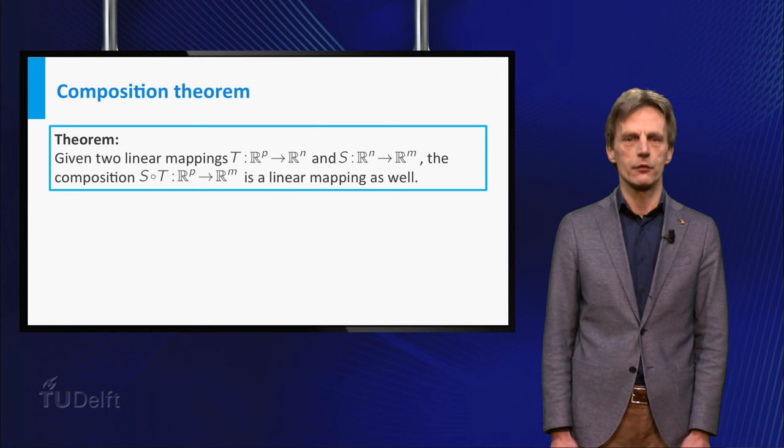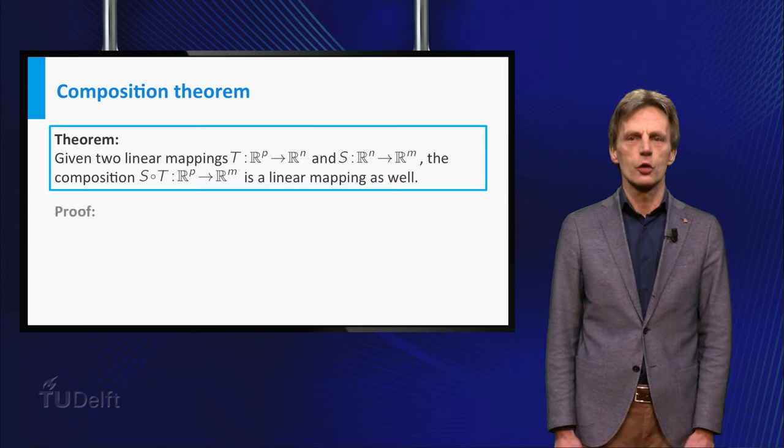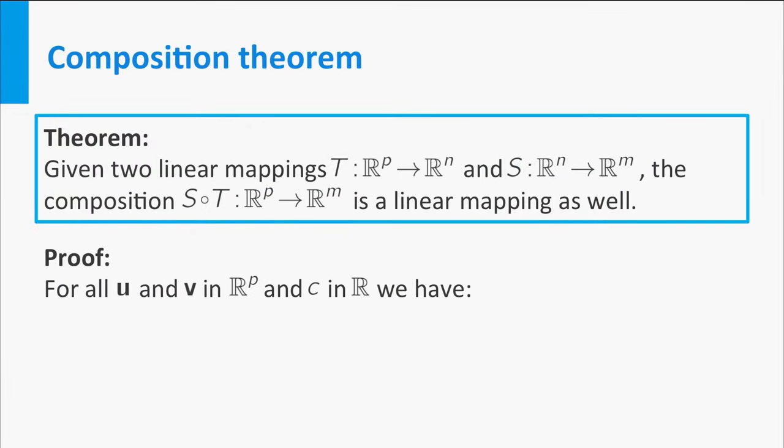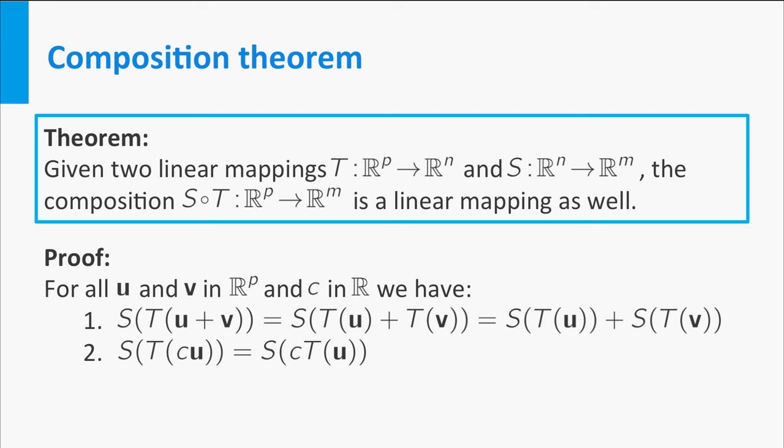Here is the proof of that theorem. For all u and v in Rp and C in R, we have S of T of u plus v is equal to S of T u plus T v because T is linear. This is equal to S of T of u plus S of T of v because S is linear. S of T of C times u is equal to S of C times T u because T is linear, and this is equal to C times S of T of u because S is linear.